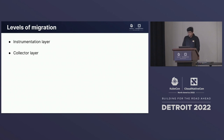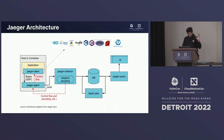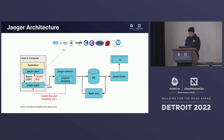There are two levels of migration. One is the instrumentation layer and the other is the collector layer. In the Jaeger architecture, on the left side there is an application, the Jaeger client, and the Jaeger agent. Spans are pushed to the Jaeger agent, then to the Jaeger collector, the database, and the UI. This is the complete ecosystem of Jaeger. Spark jobs are optional.